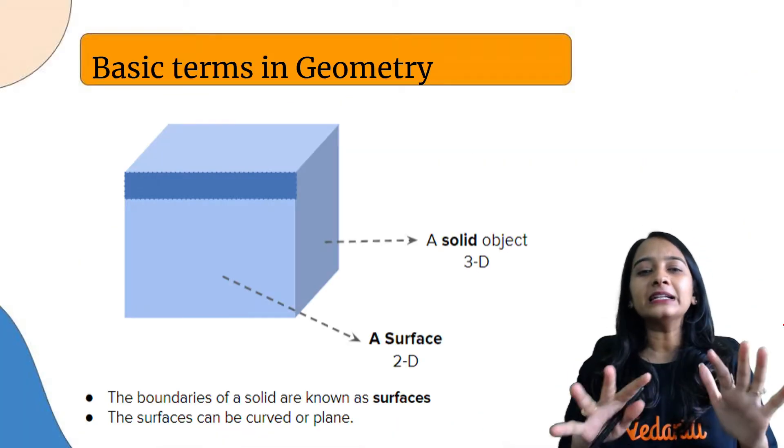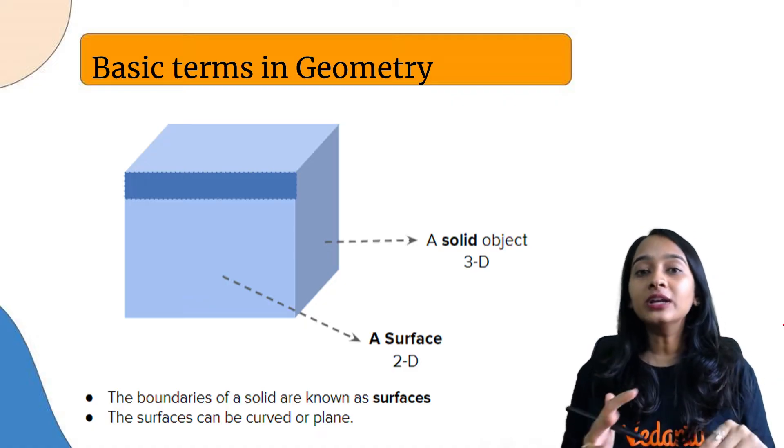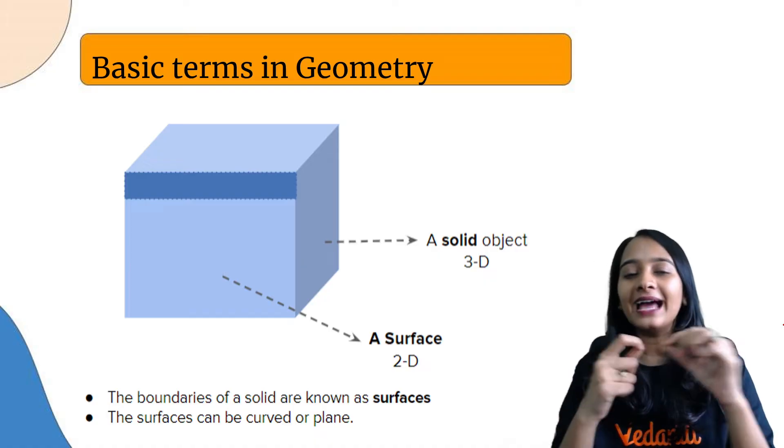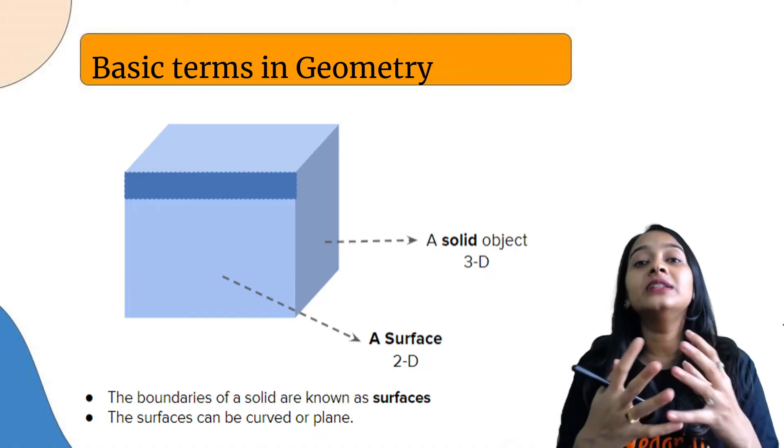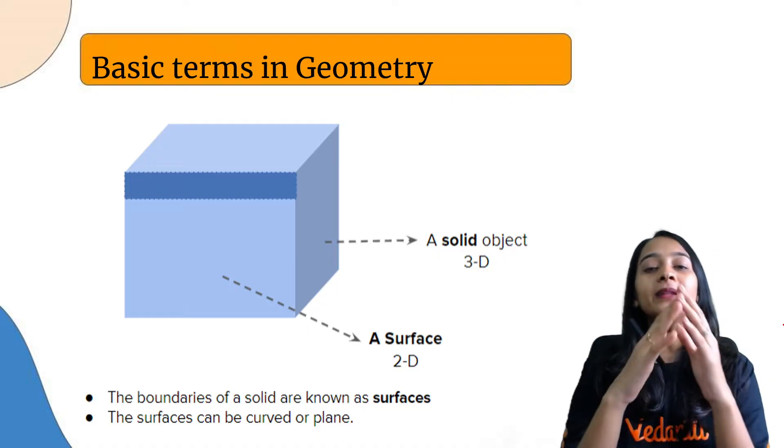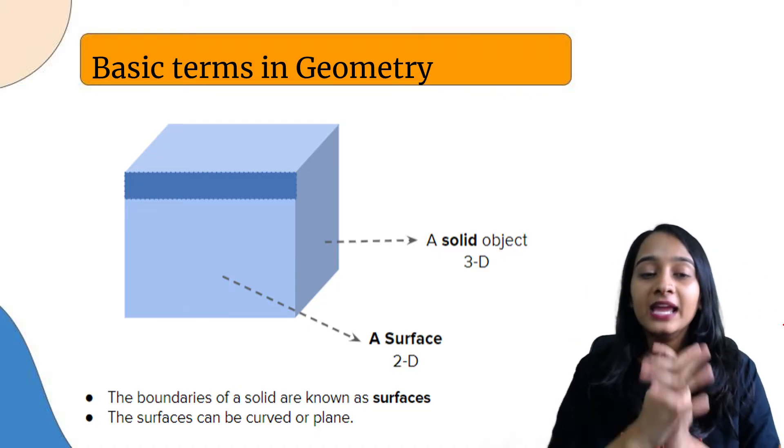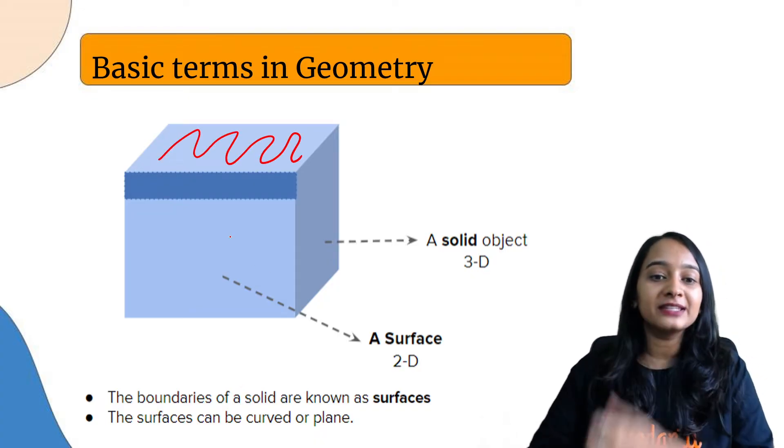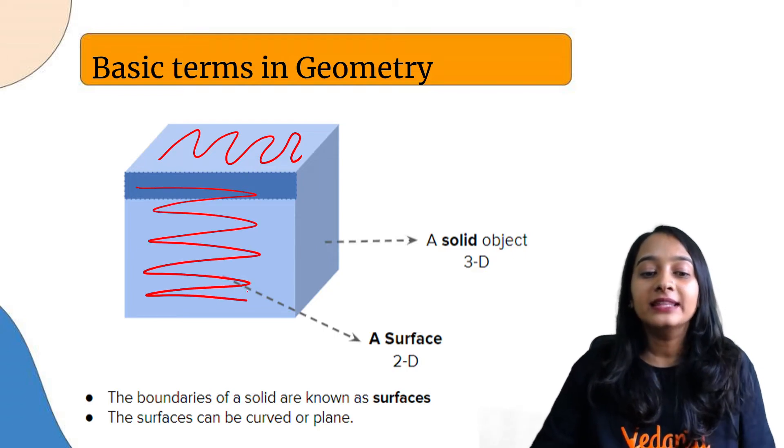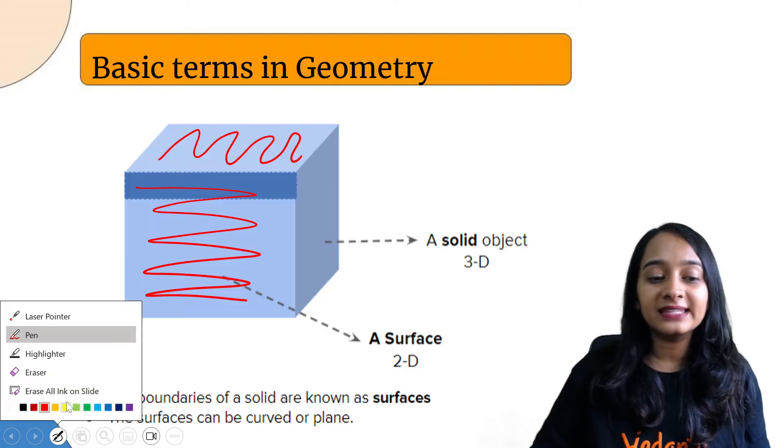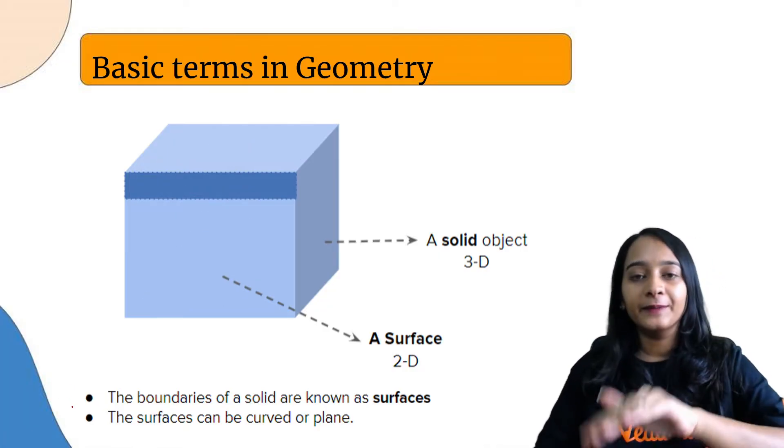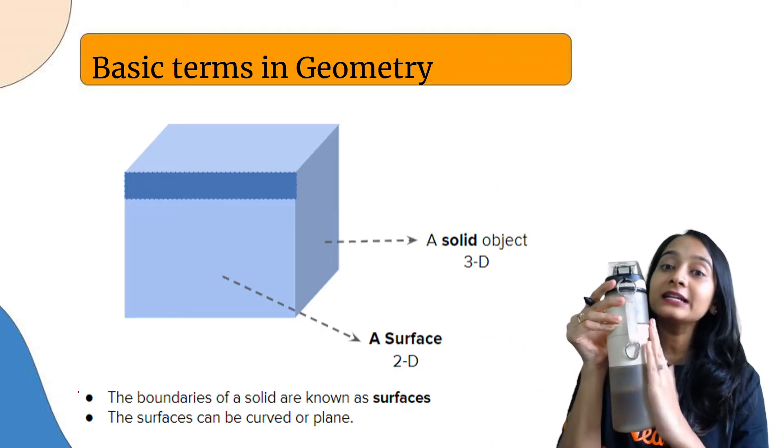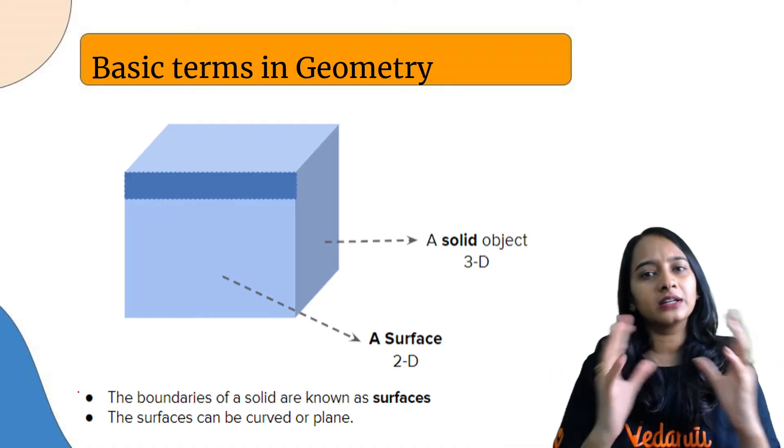Now, what are the basic terms of geometry? Euclid has contributed a lot towards geometry. We study about point, line, line segment, and ray - these were the definitions given by him. When we look at a 3D object or solid object, it is made up of 2D surfaces. The boundaries of a solid are known as surfaces. Surfaces can sometimes be plane or curved, like a water bottle which is a 3D object with a curved surface.